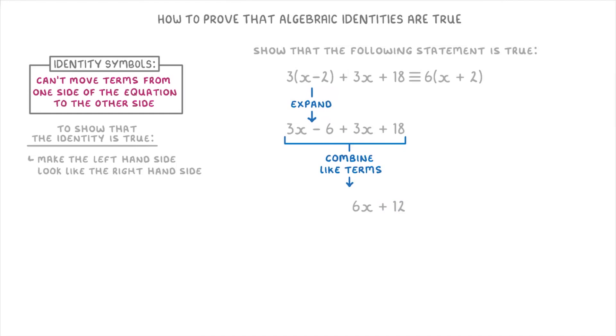Now this expression here is as simple as we can go. But if we look at it, it's still not the same as our right hand side. If we think about it though, this is because the right hand side has been factorised.